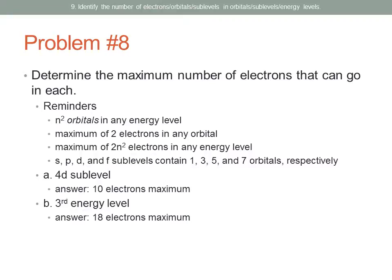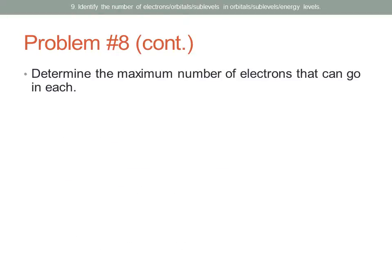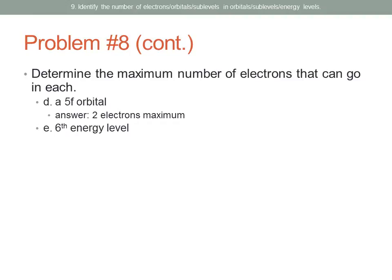The third energy level: using 2N squared, N=3, so 3 squared is 9, times 2 is 18 electrons maximum. The 6P sublevel: P sublevels have three orbitals, so three times two is six electrons maximum. For a single 5F orbital — regardless of sublevel or energy level — any orbital can hold a maximum of two electrons. The sixth energy level: 6 squared is 36, times 2 is 72 electrons maximum.